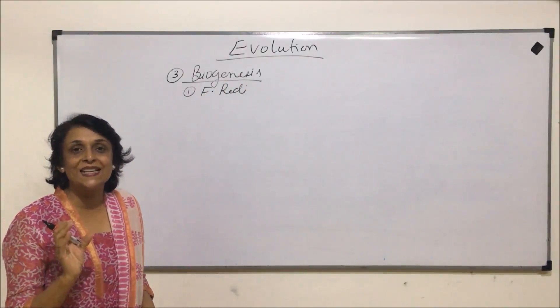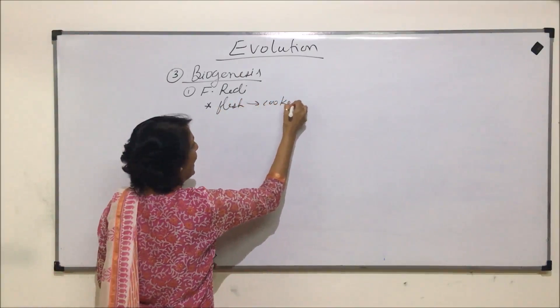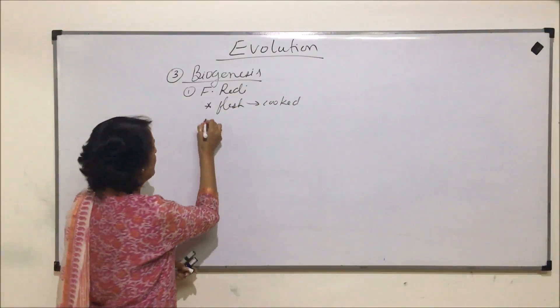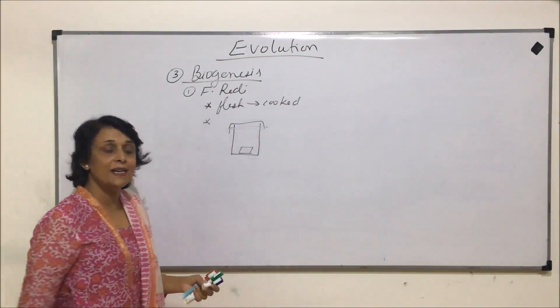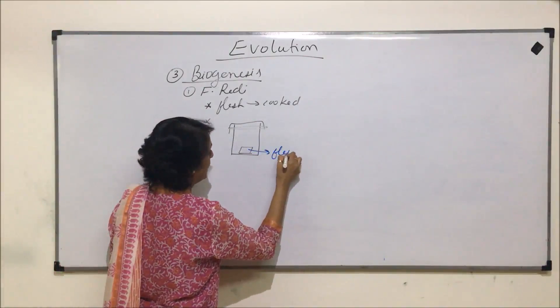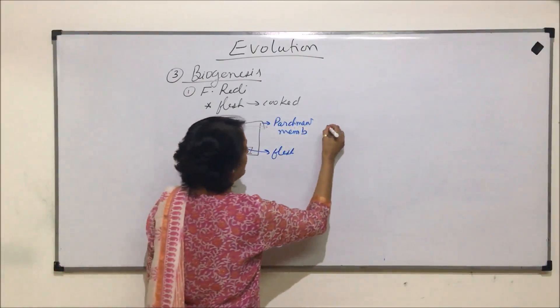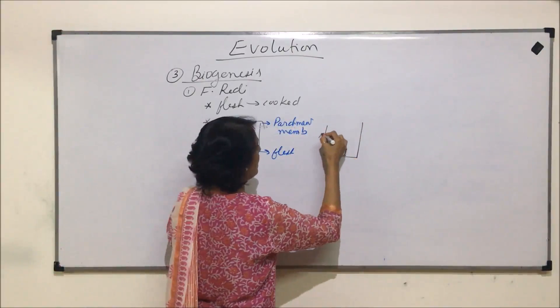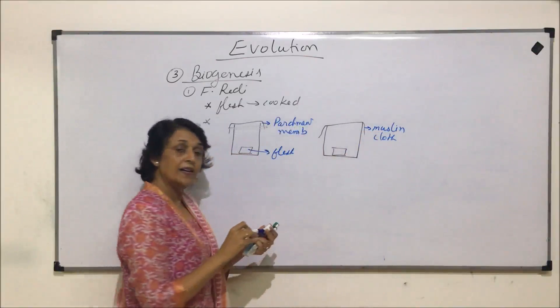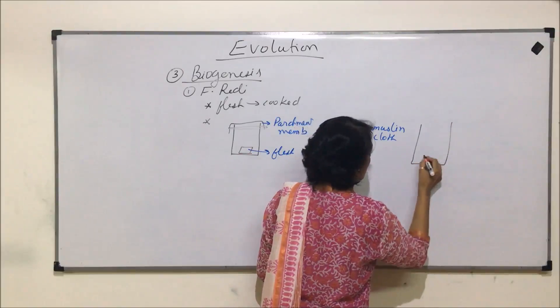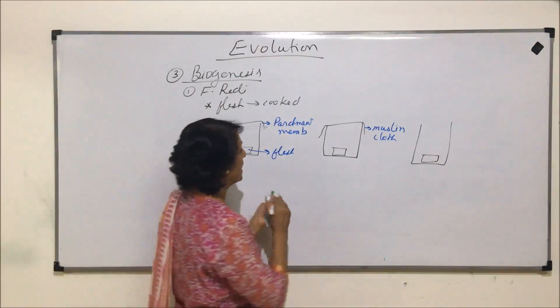What he did was, he took pieces of meat or flesh. Flesh was taken, it was cooked, and he packed those pieces in various jars. First jar, he took this piece of meat and covered it with parchment membrane. The second jar was the same thing, the cooked meat piece was taken and it was covered by muslin cloth. And the third jar was kept open. So here also there was a piece of meat or flesh and it was open. So three such jars were taken.